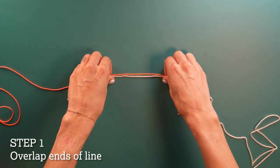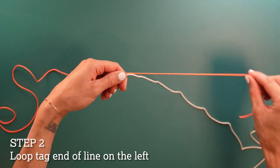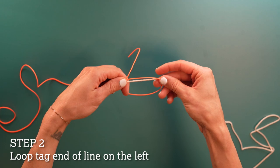First thing you're going to do is overlap the ends of the lines. Take the tag end from the line on the left and double it back to form a loop. It'll look something like this.